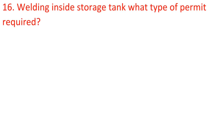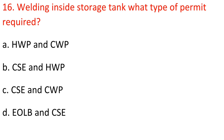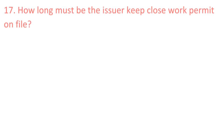Question 16: Welding inside a storage tank — what type of permit is required? A) Hot work permit and cold work permit, B) Confined space entry permit and hot work permit, C) Confined space entry permit and cold work permit, D) Equipment opening/line break permit (EOLB) and confined space entry permit. Answer: B) Confined space entry permit and hot work permit.